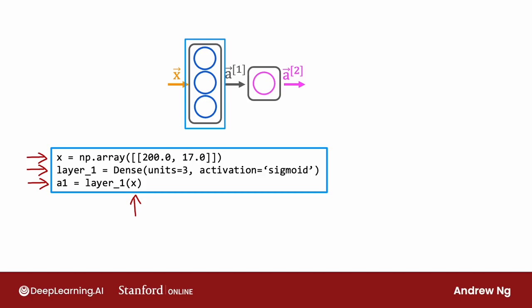So that's how you get a1, which is going to be a list of three numbers, because layer 1 had three units. And so a1 here may, just for the sake of illustration, be 0.2, 0.7, 0.3.